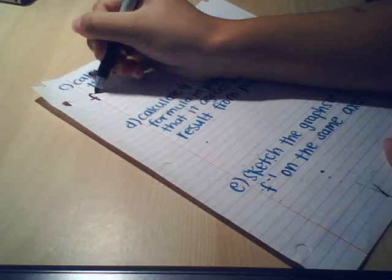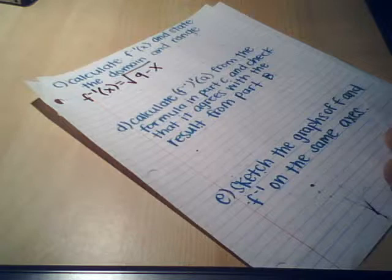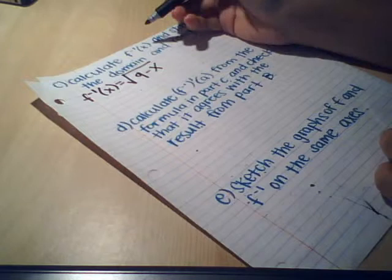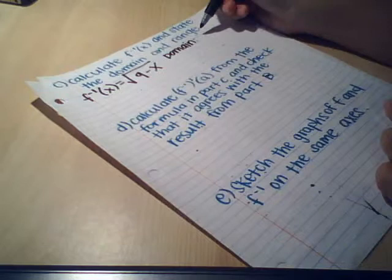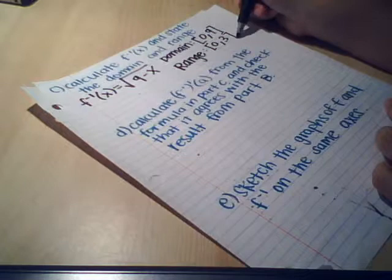So the inverse of x is simply 9 minus x. And we found this earlier in part B by switching the x and the y of the function 9 minus x squared and solving for y. This is what we got. Now the domain is 0 to 9 and the range is 0 to 3.